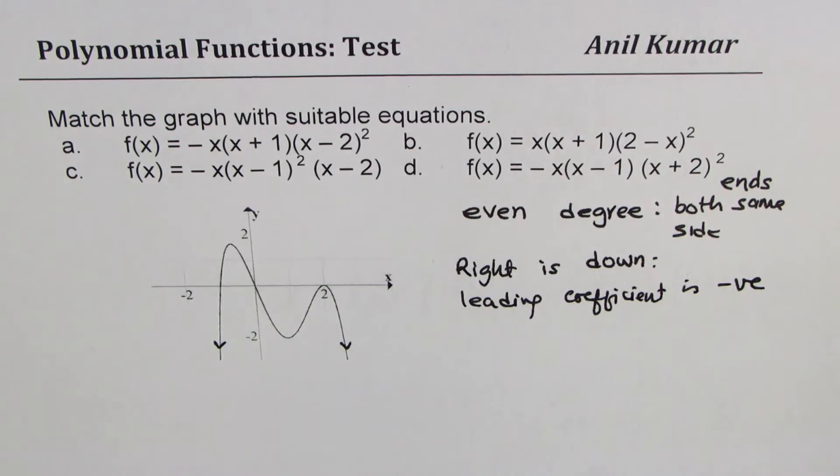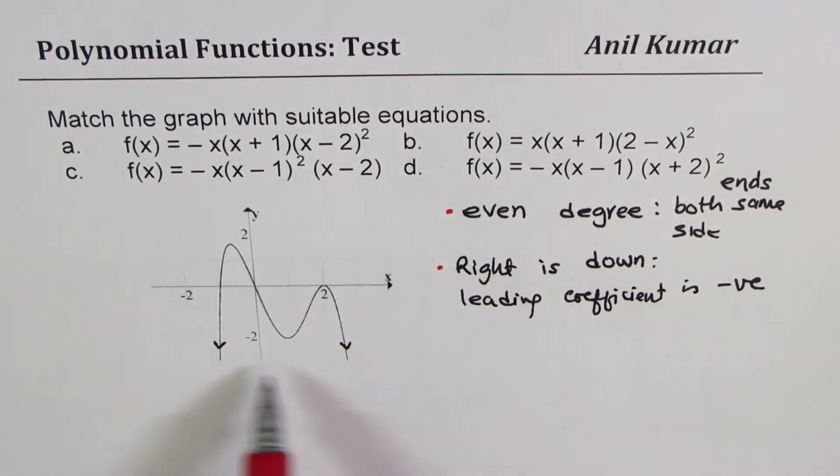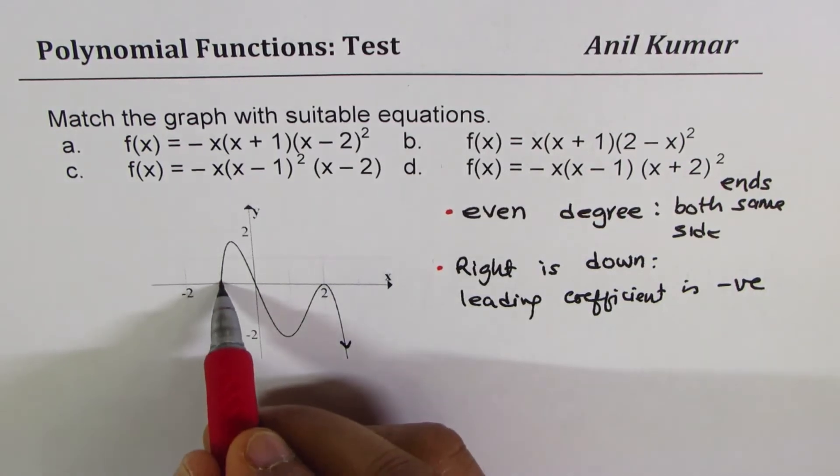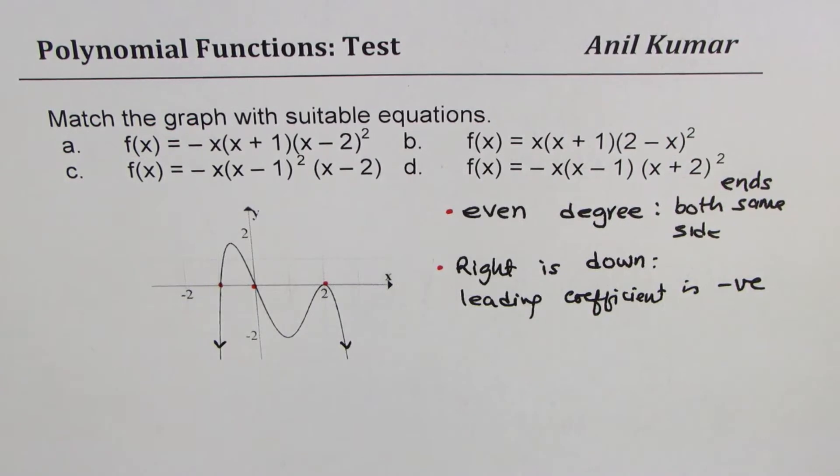So these are two critical things to understand which can help us find the answer. Now what else do you get from here? You actually can see all the zeros. So there are three zeros. So let's write down these zeros now, which will give us the factors.